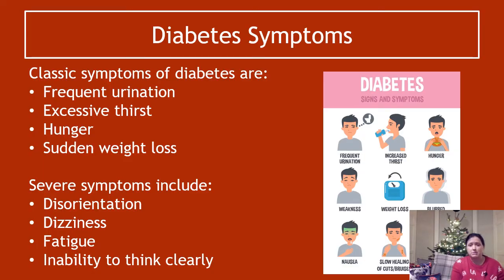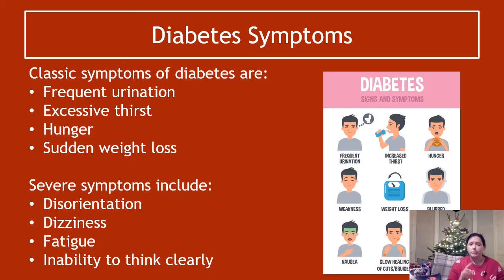There are some severe symptoms of diabetes that include disorientation — the person doesn't know where they are or what they're doing — dizziness, fatigue, and inability to think clearly. With diabetics who maybe have a bad hypo or hyper incident, they can't think to get themselves out of the situation — they know they should eat some sugar or take insulin, but their brain cannot make that connection.